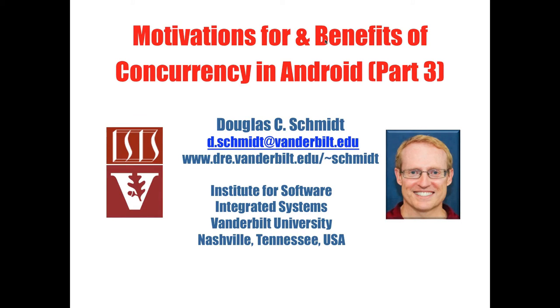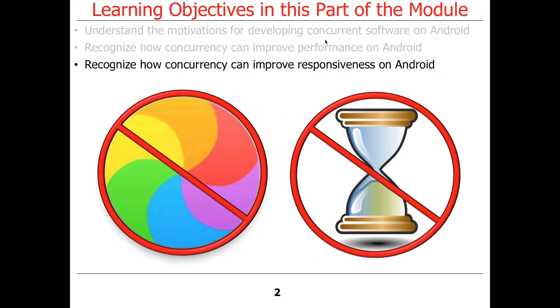Today we're going to talk about some additional benefits of concurrency. In particular, we're going to talk first about how concurrency can help improve responsiveness in Android, although the topic is broader than that.